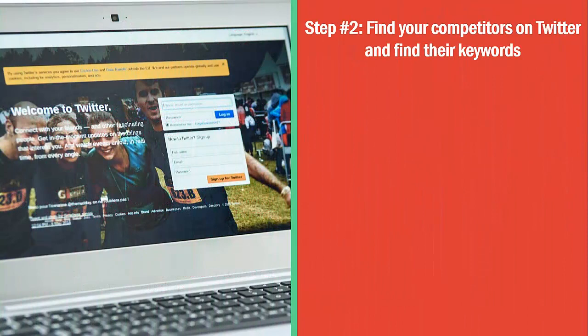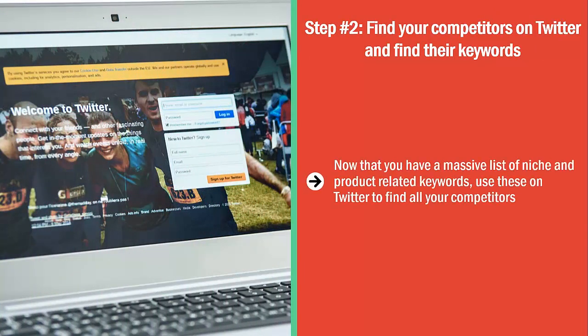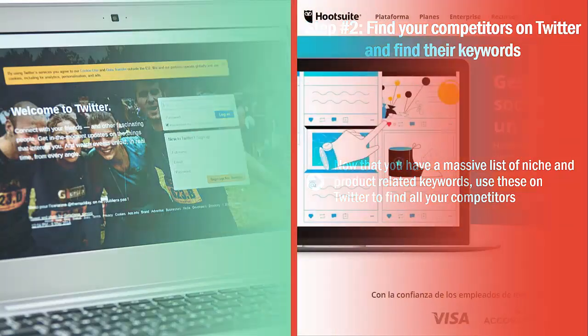Now that you have a massive list of niche and product-related keywords, use these on Twitter to find all your competitors. Get as many of them as possible. Next, look at the hashtags that they normally use with their posts and copy and paste them into a file. Get as many of them as possible.